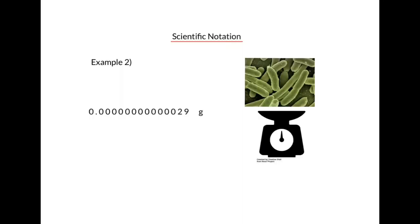Let's try another example. Here's a really small number, and it represents the average dry weight of an E. coli bacterium. Here we're going to have to move the decimal all the way over to the right in between the two and the nine, the significant digits in this case. So let's count how many times we move the decimal. One, two, three, four, five, six, seven, eight, nine, ten, eleven, twelve, thirteen places to the right.